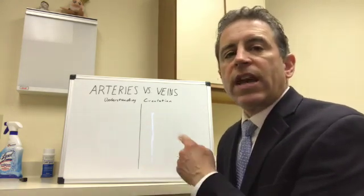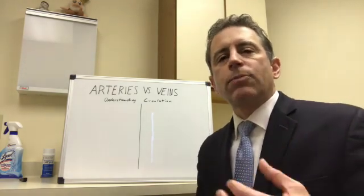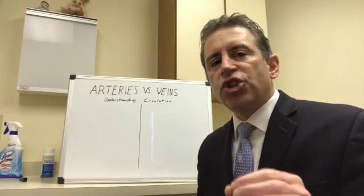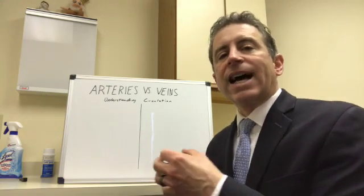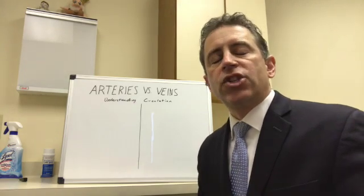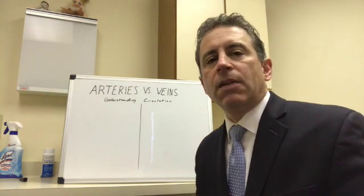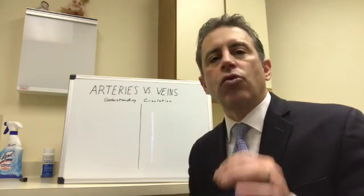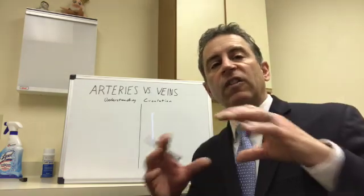So we have arteries and we have veins. Both of them act like hoses to transport blood somewhere. Arteries bring oxygen-rich blood to the foot. Veins will bring the deoxygenated blood back to the heart to get refilled up with oxygen again. Arteries are deeper within the leg and foot to protect them because they are so vital. To better understand these two structures, let's actually do a cross section — that's when we cut the hose in half and look at it from the center.